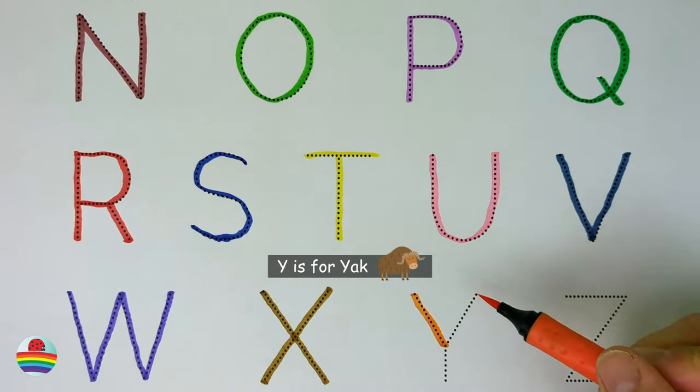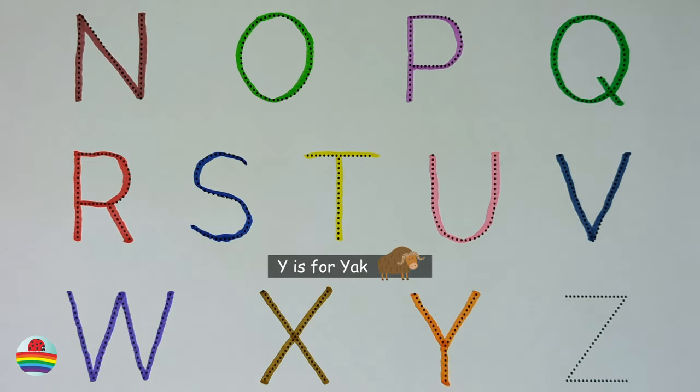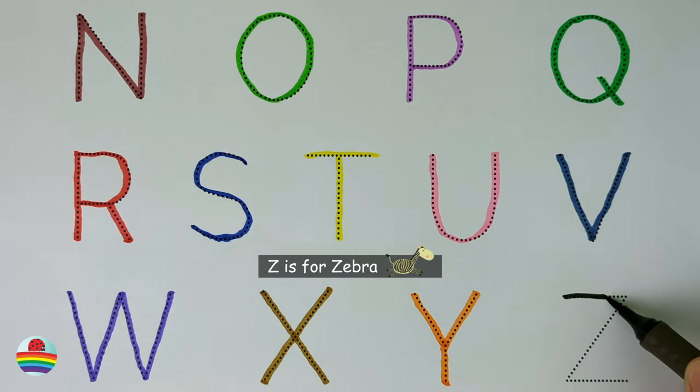Y. Y is for yak. Z. Z is for zebra. Thank you.